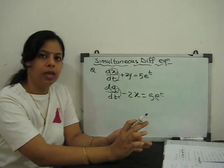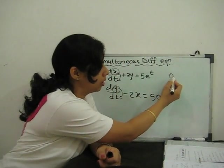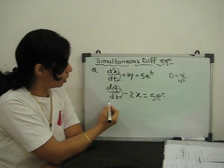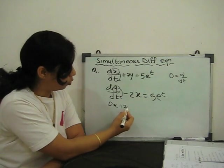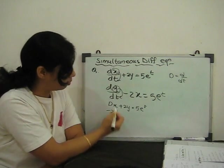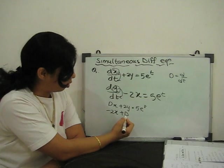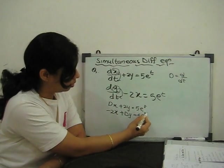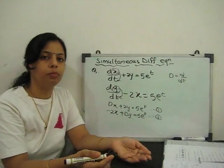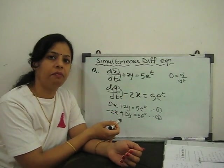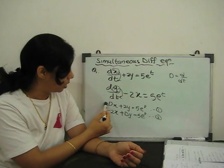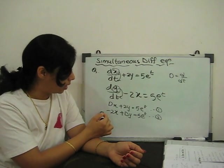Both x and y are functions of t. Now if we substitute D = d/dt with respect to our independent variable, our equations become: Dx + 2y = 5e^t (equation 1), and Dy − 2x = 5e^t (equation 2). Like simple equations, we have to eliminate one variable — either x or y — and then solve.